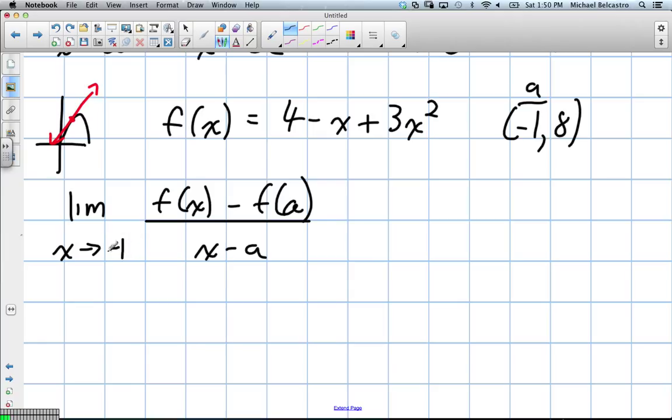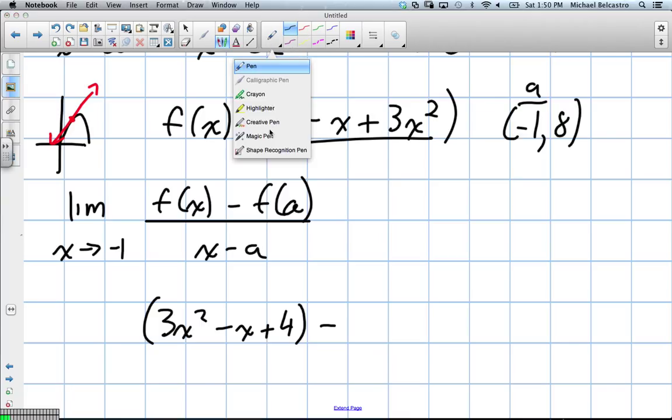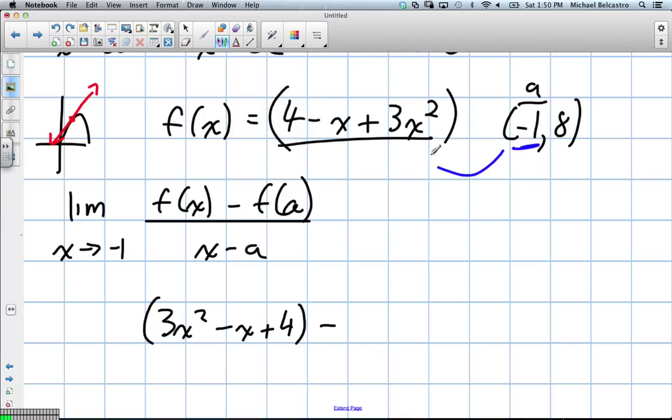Okay, well, if x approaches negative 1, we're going to get our f at x is our equation. This is the equation they've given us here. So we have 3x squared, I'm just going to write it the other way, since that's how we're used to writing it in mathematics, minus x plus 4.